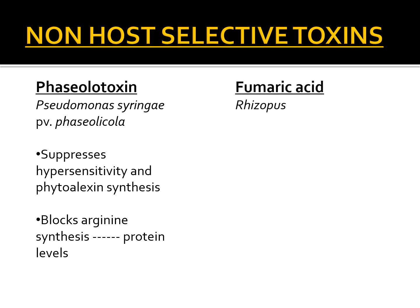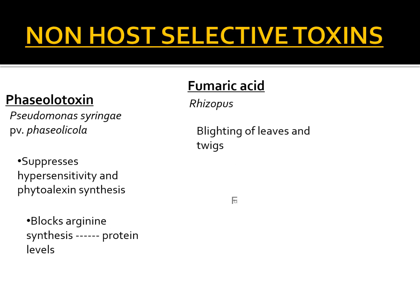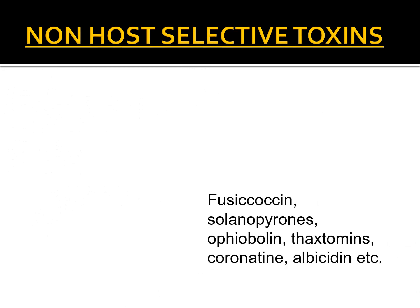The last non-host selective toxin we will study is fumaric acid, produced by species of Rhizopus that cause hull rot of almond. Though its in-depth mechanism of action is not known, this toxin is seen to cause and aggravate blighting of the leaves and twigs. There are many more non-host specific toxins including fusicoccin, thaxtomin, coronatine, albicidin, ophiobolin, cercosporin, and solanopyrones.